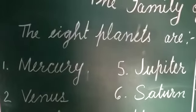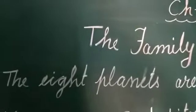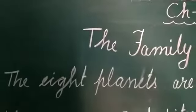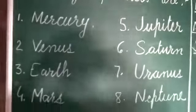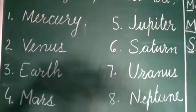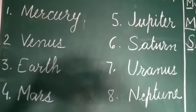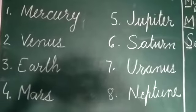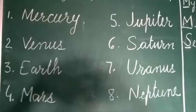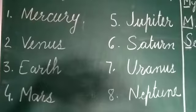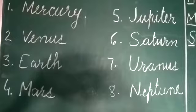There are 8 planets in the Sun's family. The 8 planets are Mercury, Venus, Earth, Mars, Jupiter, Saturn, Uranus, and Neptune.